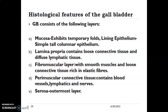After the lamina propria, you have a fibromuscular layer made up of elastic fibers, connective tissue, and smooth muscle cells — that is why we call it the fibromuscular layer. After the fibromuscular layer, you have the perimuscular connective tissue containing neurovascular structures. And lastly, the outermost layer is the serosa, mainly connective tissue. So the five layers are: mucosa, lamina propria, fibromuscular, perimuscular, and serosa.